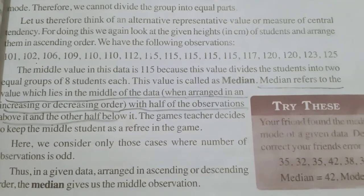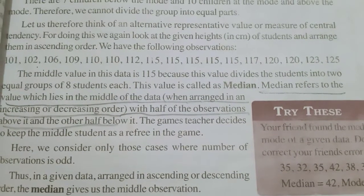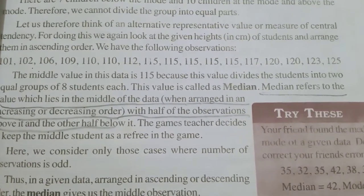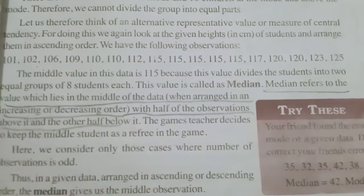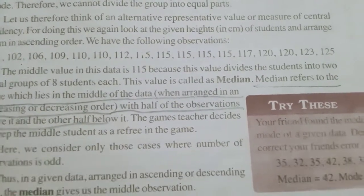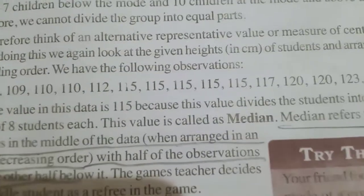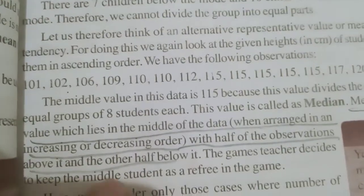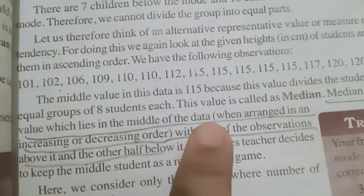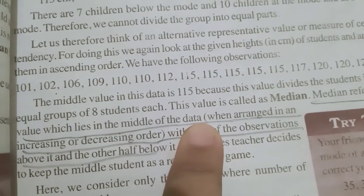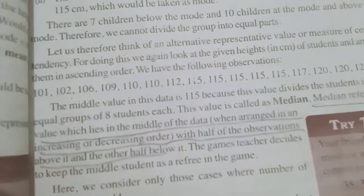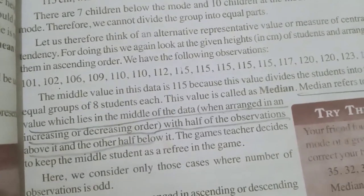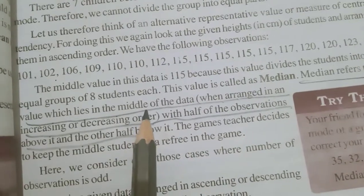Just we revise, what is mode? Mode of the data is the number which comes most of the time. Mean is what? Mean is the sum of all observation divided by number of observation. And the last part is the median. Data must be either in increasing or decreasing order. And what will be the middle term? Middle term of the data is known as median.